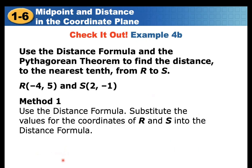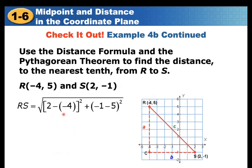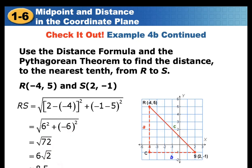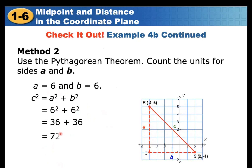Another example: use the distance formula and the Pythagorean theorem to find the distance to the nearest tenth from R(-4, 5) to S(2, -1). Substituting: √((2-(-4))² + (-1-5)²) = √(36 + 36) = √72 = 6√2 ≈ 8.5. By the Pythagorean theorem: A = 6, B = 6, so 6² + 6² = 72, and √72 ≈ 8.5. You can use either method.